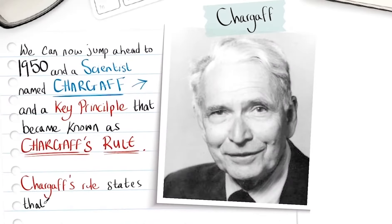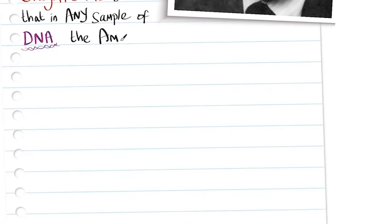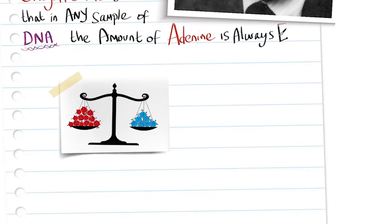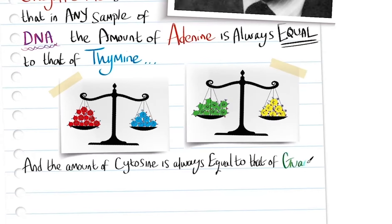Chargaff's rule states that in any sample of DNA the amount of adenine is always equal to that of thymine, and the amount of cytosine is always equal to that of guanine.